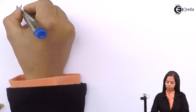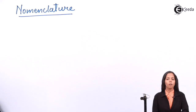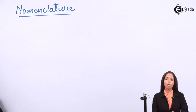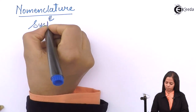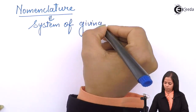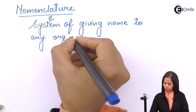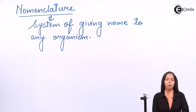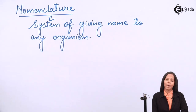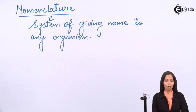The next topic we are going to study is nomenclature. Nomenclature is a process or system of giving names to any organism. There are two systems in nomenclature: one is called vernacular nomenclature and the second is called binomial nomenclature. Binomial nomenclature is generally also called the scientific system of giving names.